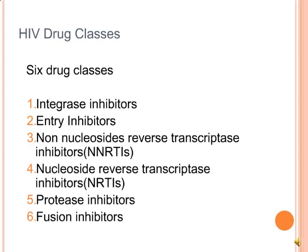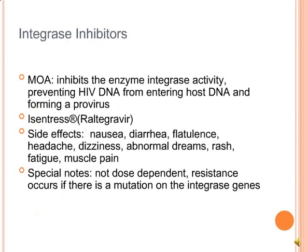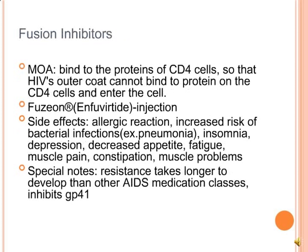The first drug class is the integrase inhibitor. The mechanism of action is that it inhibits the enzyme integrase, preventing HIV DNA from entering host DNA and forming a provirus. The medication is raltegravir. Side effects include nausea, diarrhea, flatulence, headache, dizziness, abnormal dreams, rash, fracture, and muscle pain. Special note: resistance is not dose-dependent and occurs if there is a mutation on the integrase gene.